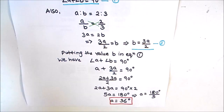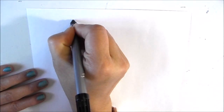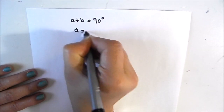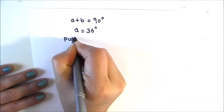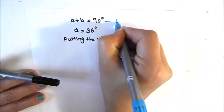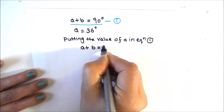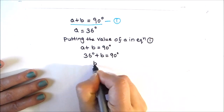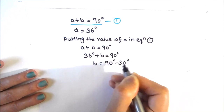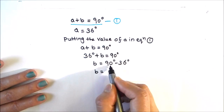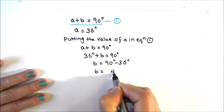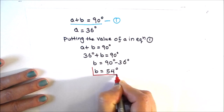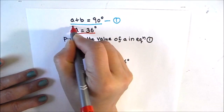Now we need to find the value of B. Using equation 1, A plus B equals 90 degrees. Substituting A equals 36 degrees: 36 plus B equals 90 degrees, so B equals 90 minus 36, which equals 54 degrees. So angle B is 54 degrees.